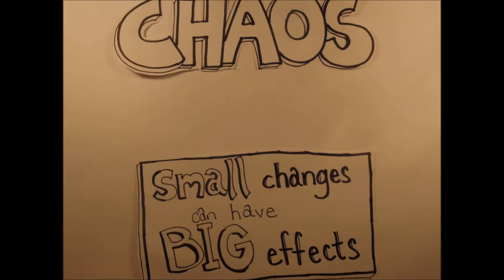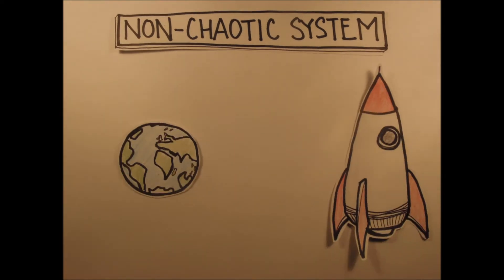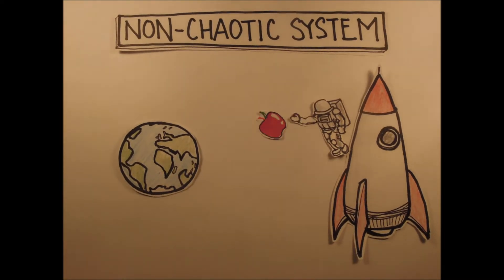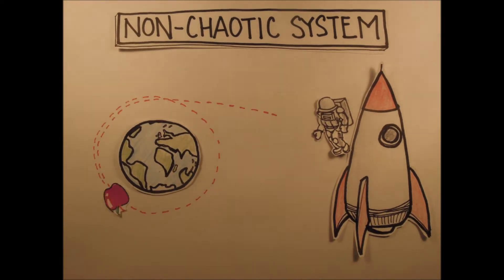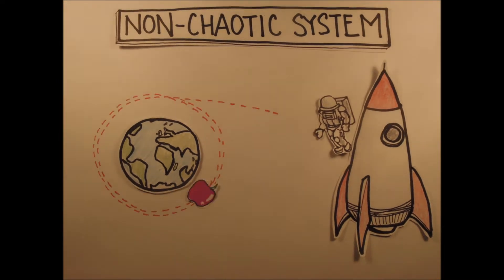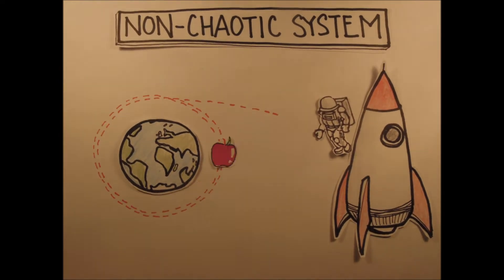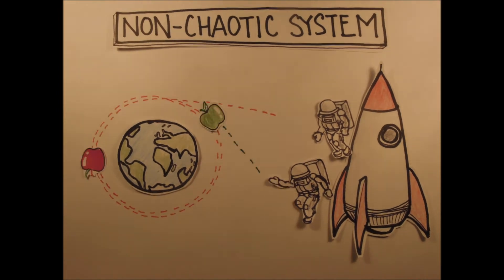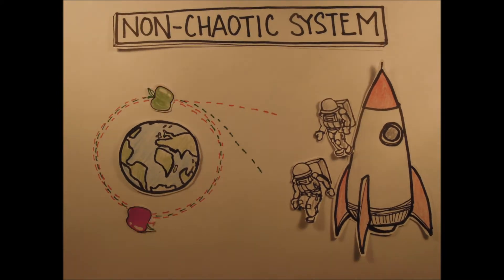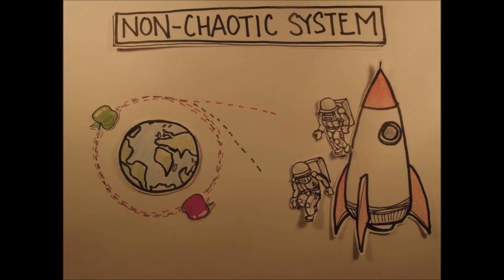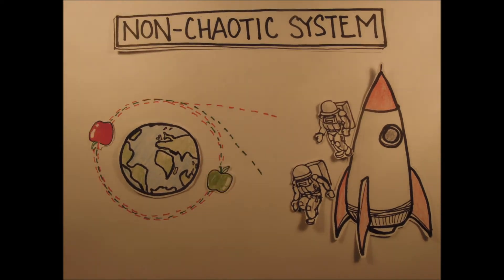To start off, let's look at a non-chaotic system. Here we have an astronaut throw an apple as hard as he can. Physics can predict exactly how that apple travels, which in this case is an orbit around the Earth. Then his friend comes over and throws another apple, which ends up in a very similar orbit to the first. Now we say that this system is predictable.